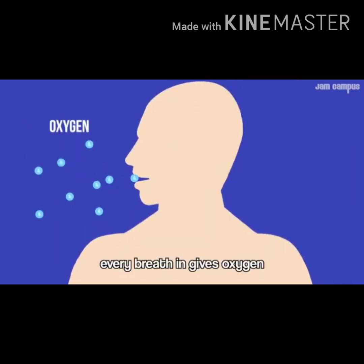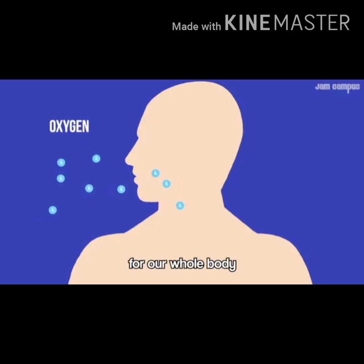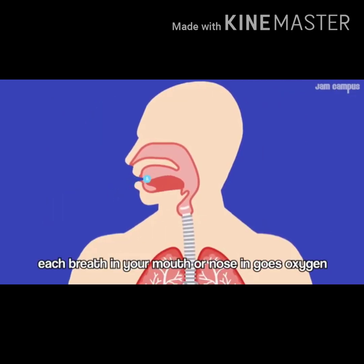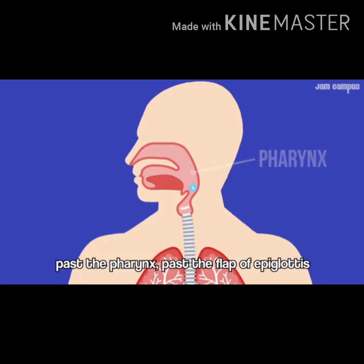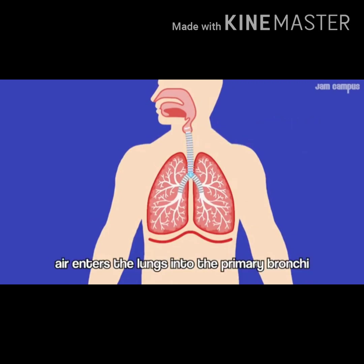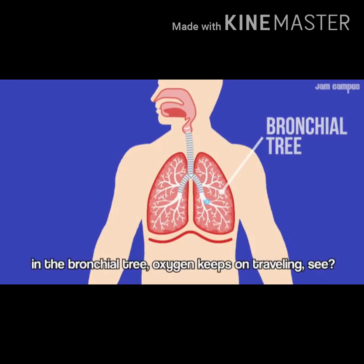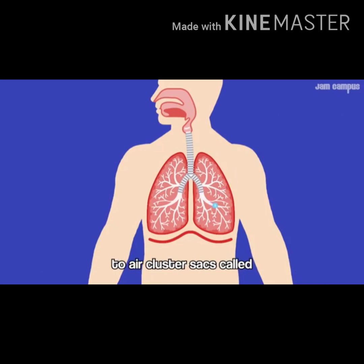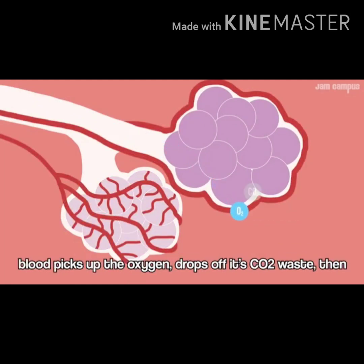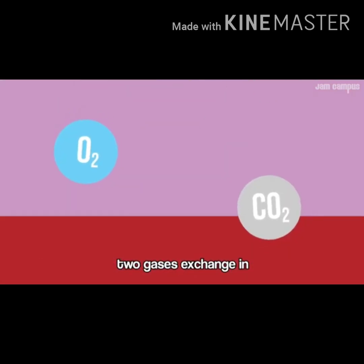Every breath in gives oxygen for the whole body; each breath out provides carbon dioxide — two gases exchanging. Oxygen enters through the mouth and nose, passes the epiglottis, the larynx, then the trachea divides. Air enters the lungs in the primary bronchi. In the bronchial tree, oxygen keeps traveling deep into the bronchioles to tiny sac-like structures called alveoli, with capillaries on the outside. Blood picks up the oxygen and drops off its CO2 waste, and the two gases exchange.